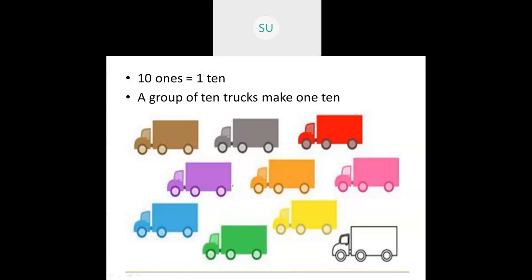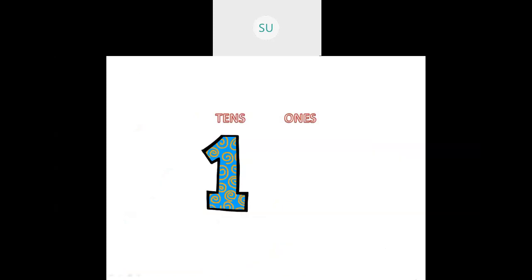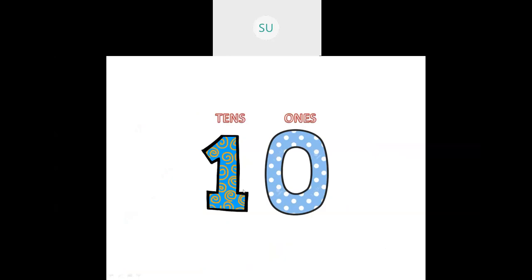So here we have a group of 10 trucks — 1, 2, 3, 4, 5, 6, 7, 8, 9, 10. These group of 10 trucks together make a 10. So these 10 trucks make one 10. Any group of 10 taken together will make a 10. If I take 10 individual sticks and make a bundle, those 10 ones together make 1 group of 10. So here I have 1 ten and in the ones place we have 0. The number is 10 — one 10 and zero ones together make 10.